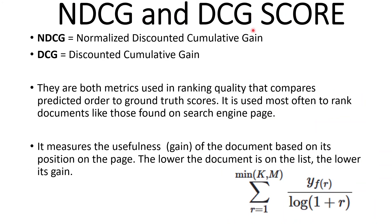NDCG and DCG score. DCG stands for discounted cumulative gain and NDCG stands for normalized discounted cumulative gain. They are both metrics used in ranking quality that compare predicted order to ground truth order. They are most often used to rank documents like those found on Google search engines. The metric measures the usefulness — or gain — of a document based on its position on the page: the lower the document is on the list, the lower the gain. NDCG is simply the normalized version of DCG.